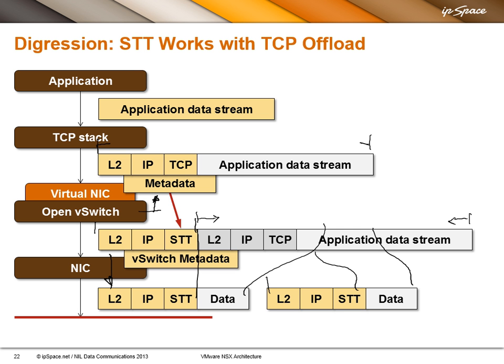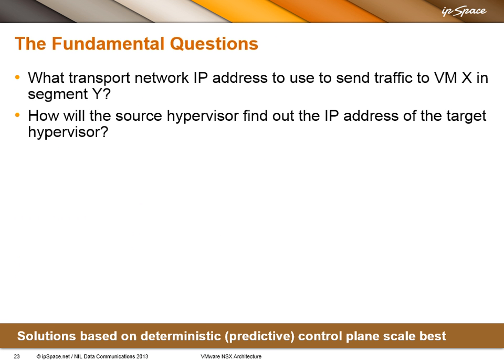There are NIC cards coming to market that will do TCP offload with VXLAN encapsulation. When they appear and when you have them in your server, you'll be able to do TCP offload with VXLAN. Today, if you have a performance-critical application, it's better to use STT. Coming back to the fundamentals, let's try to answer the question: how do we know which transport network IP address to use if we want to send traffic to a particular VM, and how will the source hypervisor find that out?